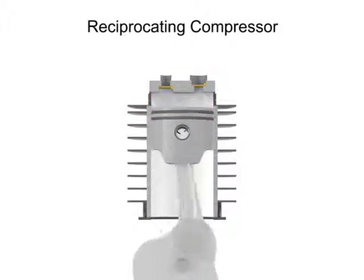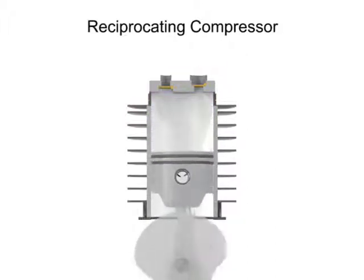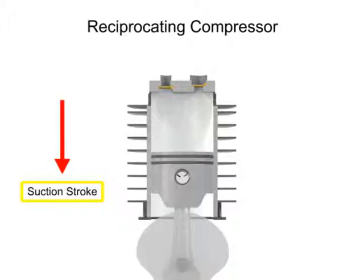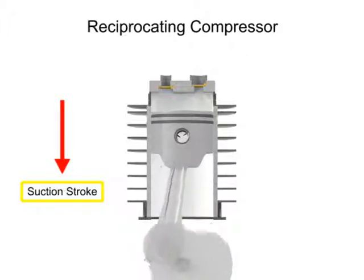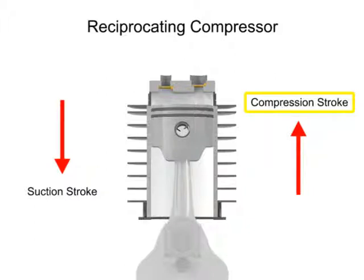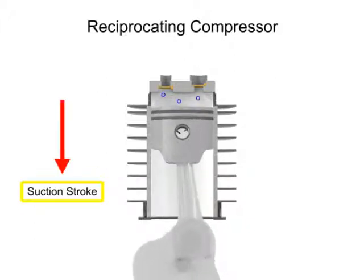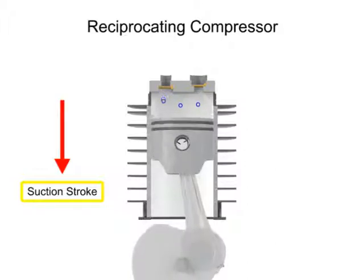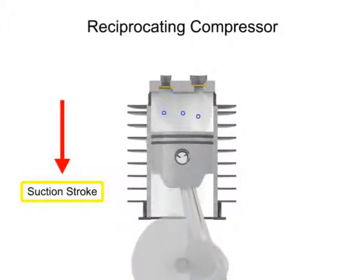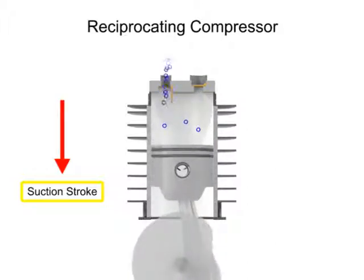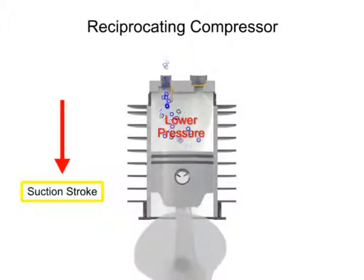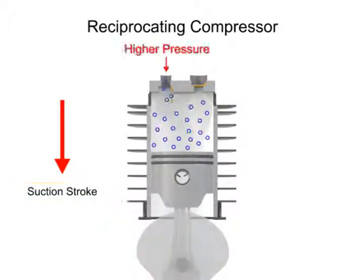The downward stroke of the piston is called the suction stroke. As the piston moves downward on its suction stroke, the volume increases within the cylinder. As the volume increases, the pressure within the cylinder becomes lower than the inlet air pressure, allowing the higher pressure outside air to push open the inlet valve and allow more air into the cylinder.